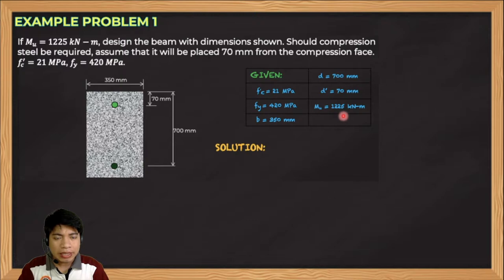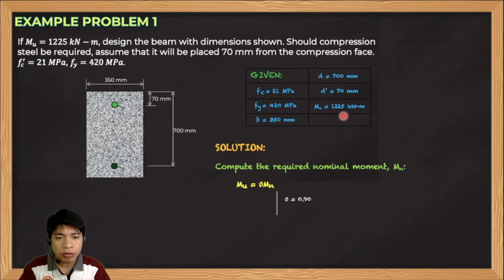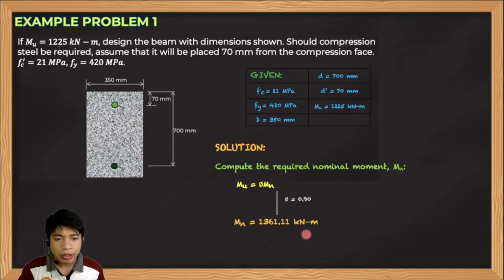The first thing we do is compute the required nominal moment M_N. We use the equation M_U = φ·M_N, setting φ = 0.90 since we want the beam to be tension-controlled. With M_U = 1,225 kN·m, M_N comes out to 1,361.11 kN·m.